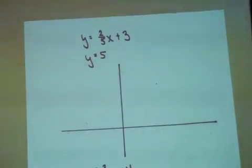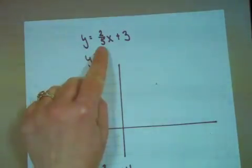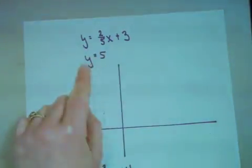Let's find the point of intersection for the equations y equals 2 fifths x plus 3 and y equals 5.